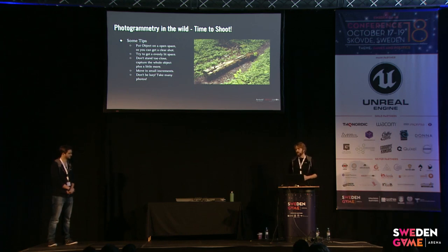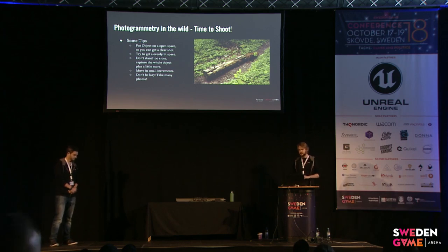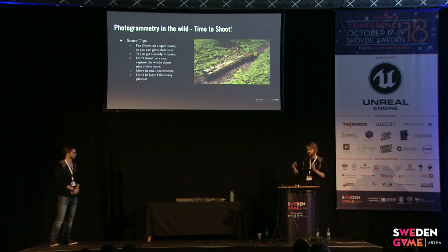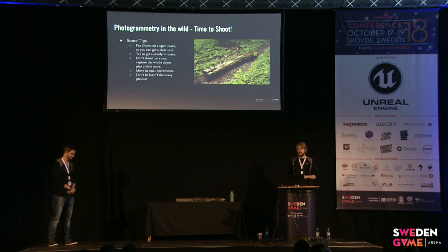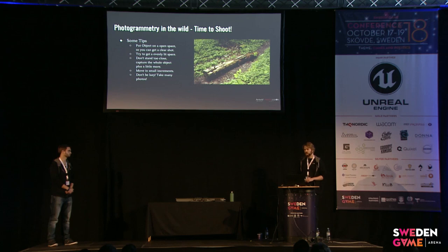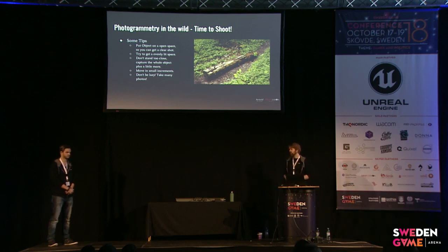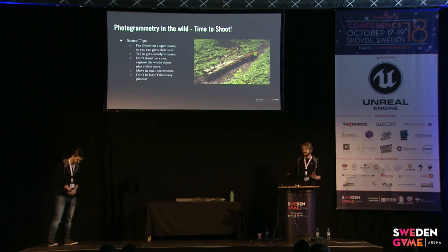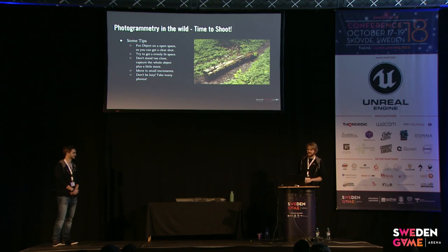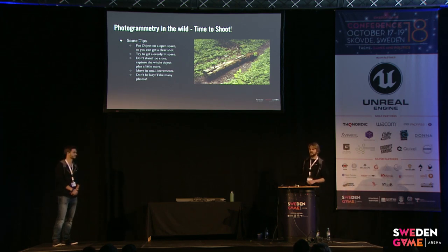Now when we have our object and can start shooting, let's go through some small things to think about. Don't stand too close and don't stand too far away. Try to get your whole object in every image of the first set of photos. We can later take detail shots — more zoomed-in images — but first we need the full array of images around the object. Move in a circle in small increments, around 5 to 10 degrees. That's like 150 images for a log. Yes — you are going to take a lot of photos. Don't be lazy. You could easily pump in a thousand photos and get a really nice result.